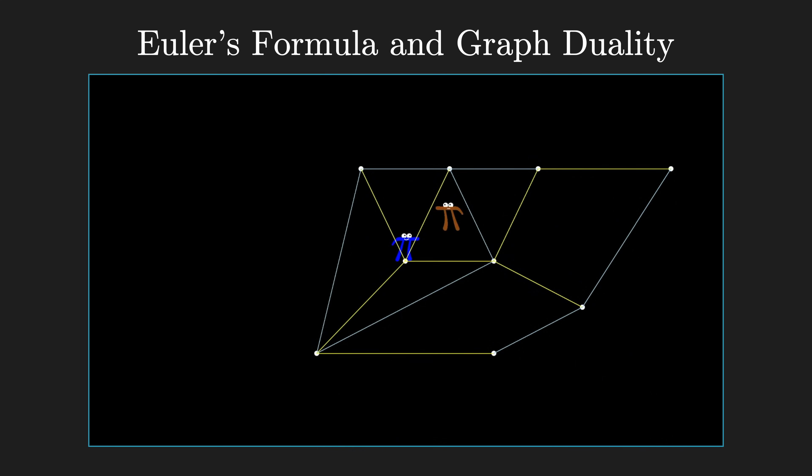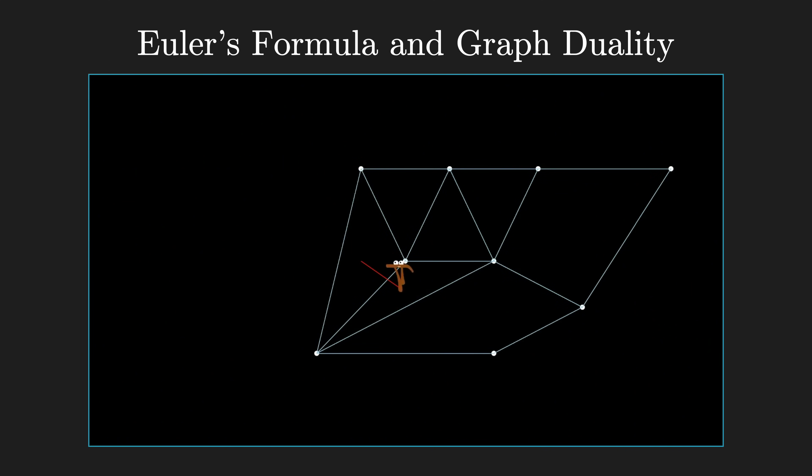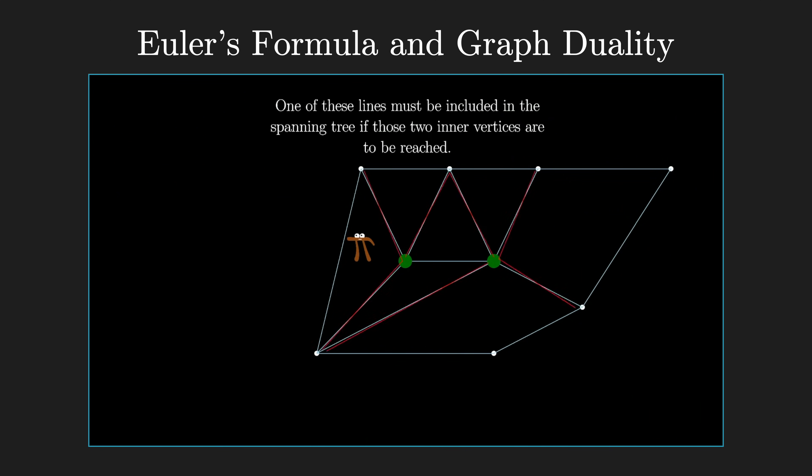The proof also talks about a dual graph, where you think of the faces that this planar graph cuts the plane into as nodes of a different graph — a different structure with some notion of connection — and the connections between faces are the edges of the graph. The whole proof comes down to thinking of a spanning tree in the original graph and a spanning tree in the dual graph. So I wanted one kind of character in one world walking on the normal nodes, and another character walking on the dual nodes. Because the animations were so primitive at the time and the only things I was drawing were geometric shapes or mathematical symbols, I was looking at mathematical symbols thinking, 'which one of these could actually walk along a graph?' The pi symbol just has some legs.